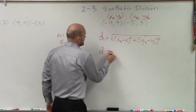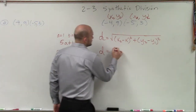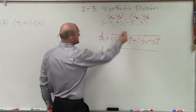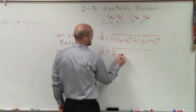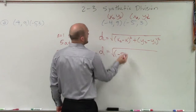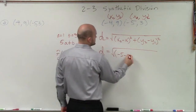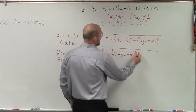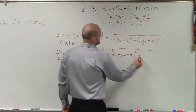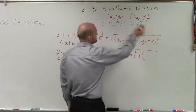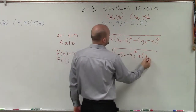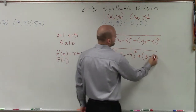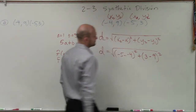So therefore, d equals the square root of x2, which is negative 5, minus x1, which is negative 4, squared, plus y2, which is 3, minus y1, which is 9, squared.